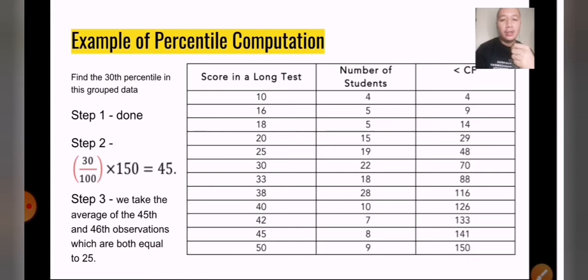So, applying what we have learned earlier, it says that you have to first arrange it in an ascending order. What you can see is that it's already arranged, so step one is already done. For step two, we will now apply the formula we have learned earlier. L is equal to percentile over 100 times number. In our case, L equals 30, why 30? Because the problem is to find the 30th percentile. That's why we have placed 30 over 100, constant times 150. Why 150? Because you have 150 people who took the exam.